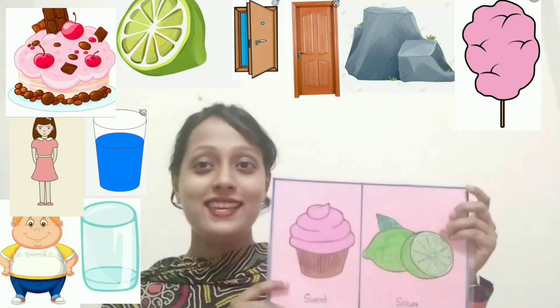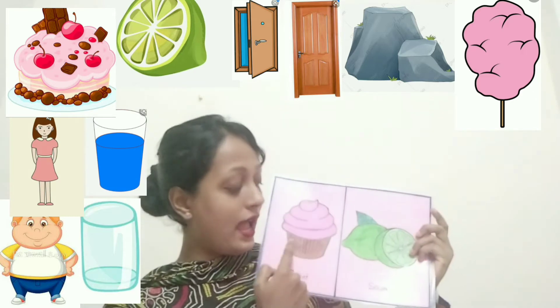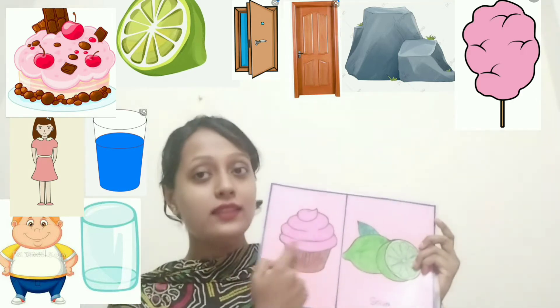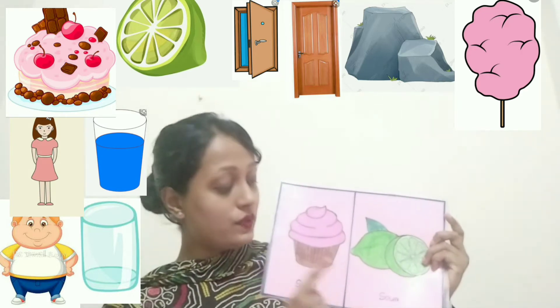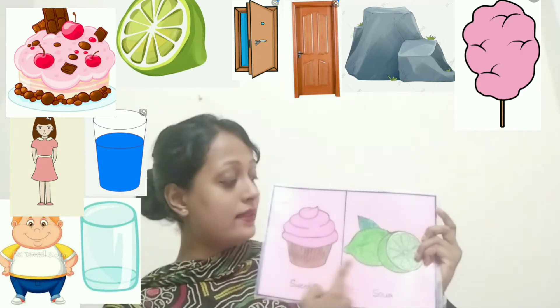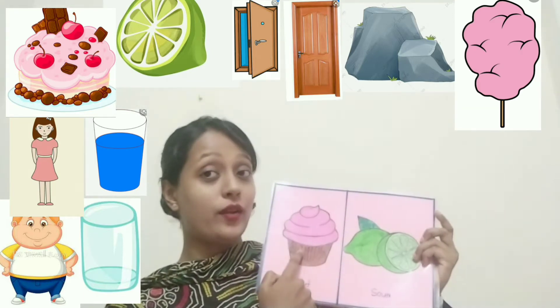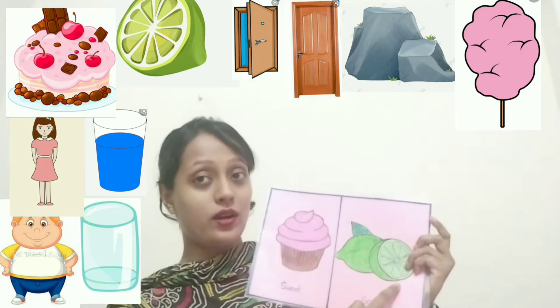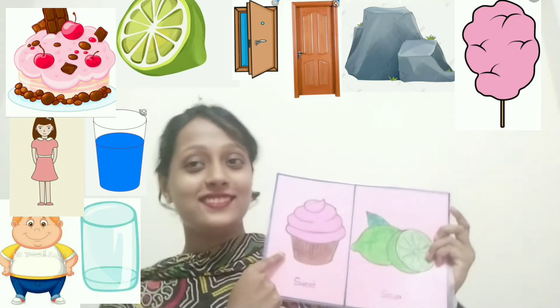Okay class, can you tell me what's this? Yes, this is sour and this is sweet. We all know that ice cream is sweet and lemon is sour. So, this is sweet and this is sour. The opposite word of sweet is sour, and the opposite word of sour is sweet. Very good.